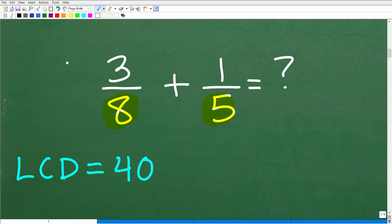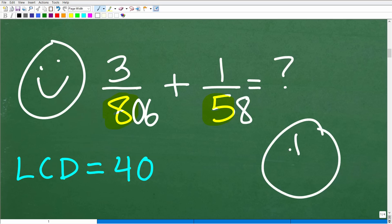And a lot of you might be saying, hey, that's pretty easy. I am an expert at the LCD. No problem. What if I made these denominators like 806 and 58? Now, at that point, a lot of you might be like, oh, come on now, Mr. YouTube math man. Give me a break. I don't want to deal with that problem. I'll just get my calculator.